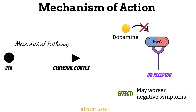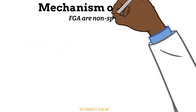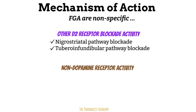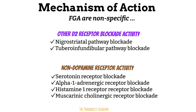These agents are nonspecific, so they block D2 receptors in other dopaminergic pathways as well — including the nigrostriatal pathway and the tuberoinfundibular pathway. They also bind to other non-dopamine receptors: serotonin receptor blockade, alpha-1 adrenergic receptor blockade, histamine-1 receptor blockade, and muscarinic cholinergic receptor blockade. These non-target receptor bindings are how we get side effects.